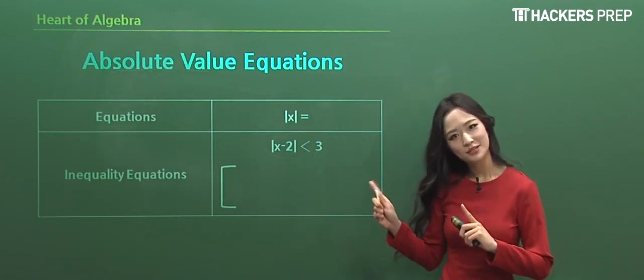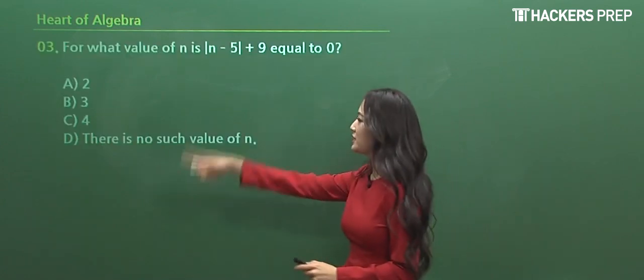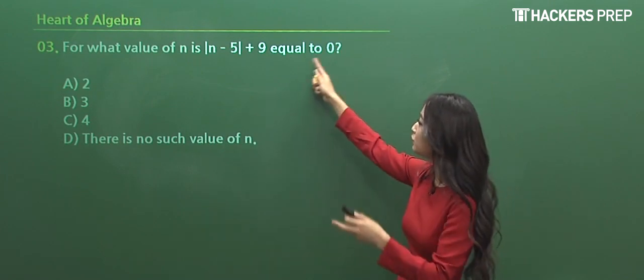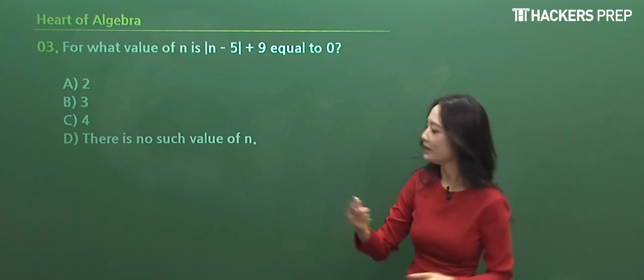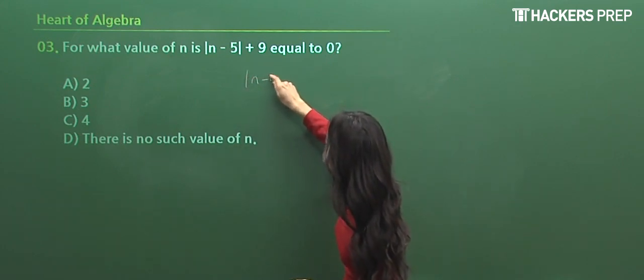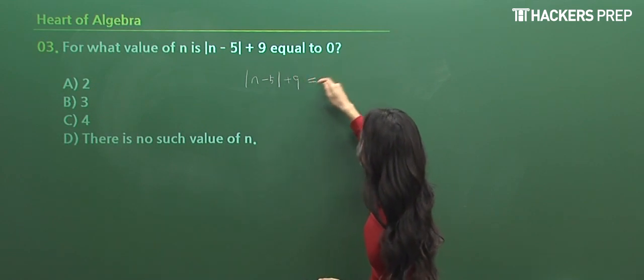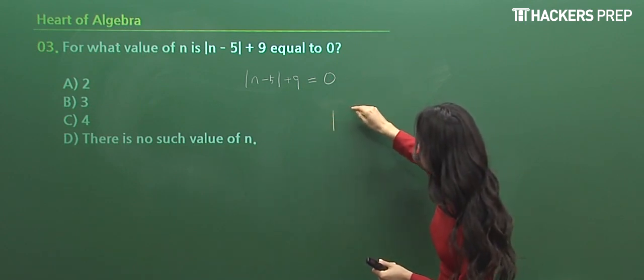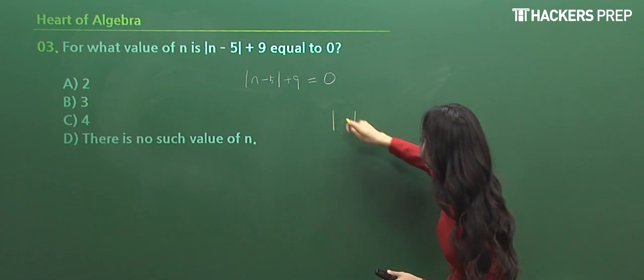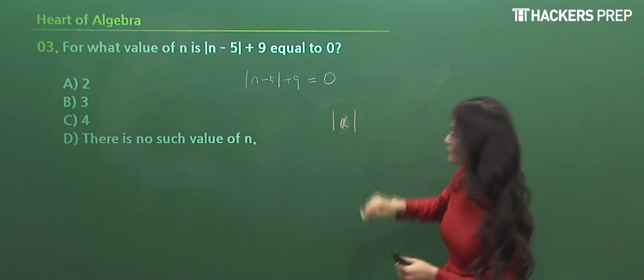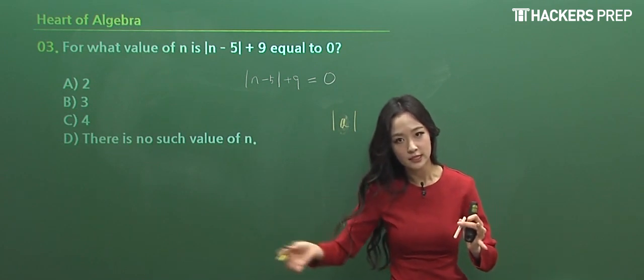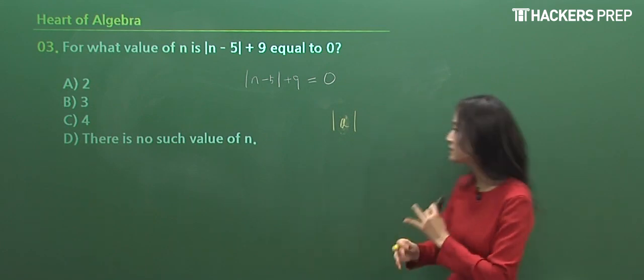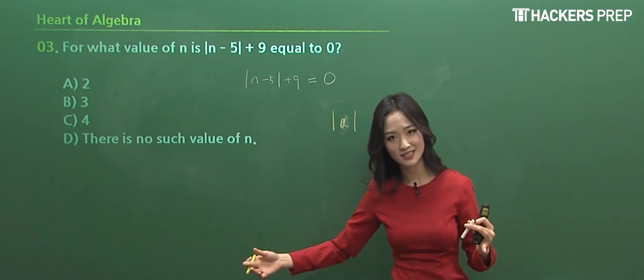So let's do number 3 together, and what are they asking for? For what value of n is this expression equal to 0? So let's just transform this into an equation form. Take whatever is given, n minus 5, absolute value plus 9, equal to 0. But let's take a moment and think about the expression itself. Whenever we take the absolute value of whatever it is, what can we extrapolate based on the expression here? The absolute value refers to a distance. So let me ask you a simple question. Can this ever have a negative value? The answer is no, right? Very good, because it refers to the distance. You can never have a negative distance. It's like, hey, where do you live? I live 2 miles away from you.